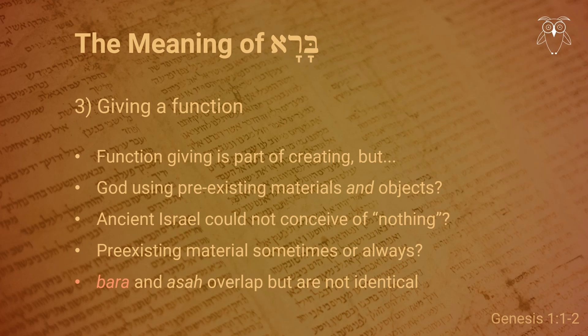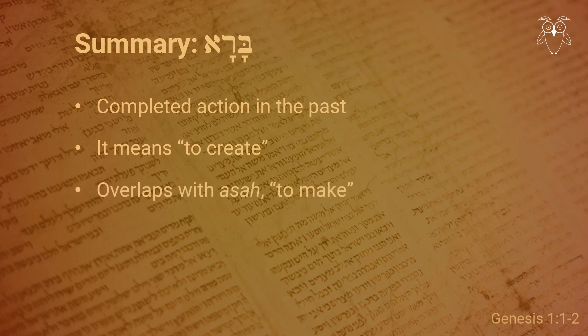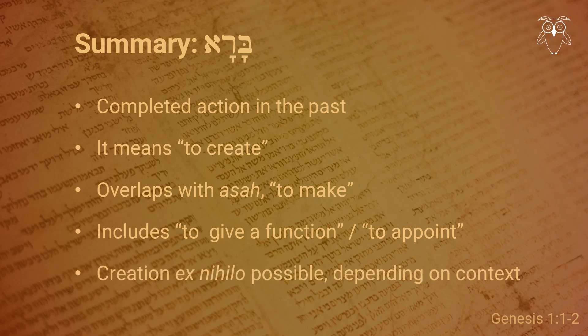Both in Hebrew and English, the words do overlap a lot in meaning, but there will be very few theologians who would correct you if you said that God made the heaven and the earth instead of created. So, in summary, bara is a finite verb describing a completed action in the past. The meaning of bara is 'to create,' a verb that has a lot of overlap with the verb 'to make,' and it certainly includes the nuance of 'to give a function' or 'to appoint.' But since only God is ever said to bara, it does mean that there is a divine nuance implicit in this verb.